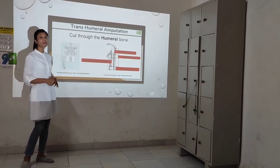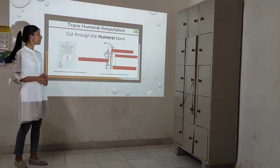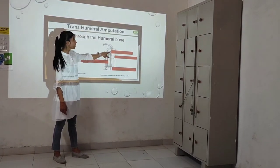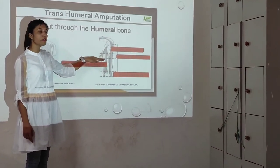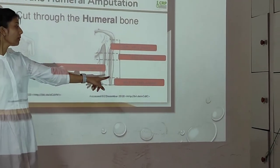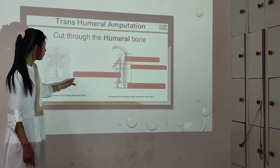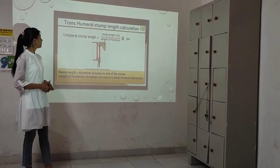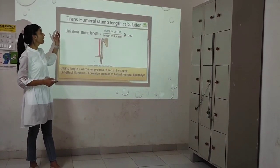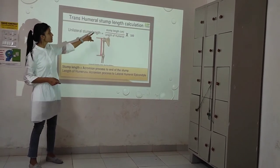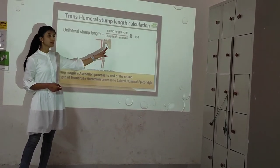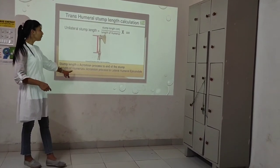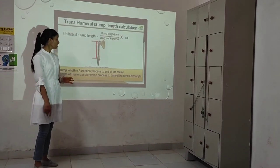Trans-humeral amputation cuts through the humerus bone. Very short amputation is 0–30% of humerus length; short amputation is 30–50%; standard or medium amputation is 50–90%; long amputation is 90–100%. Trans-humeral stump length calculation: unilateral stump length (%) equals stump length in centimeters divided by total length of humerus, multiplied by 100. Stump length is measured from the acromial process to the end of the stump; humerus length is from acromial process to the lateral epicondyle.